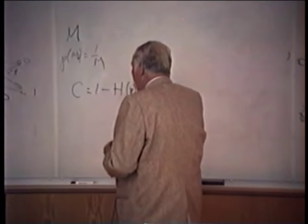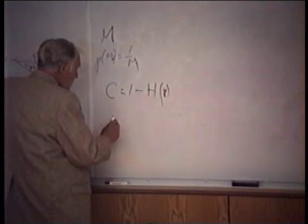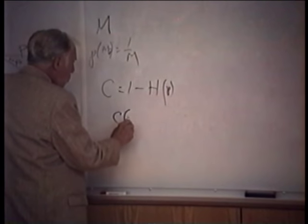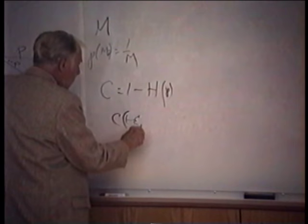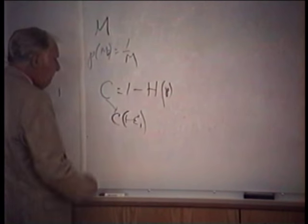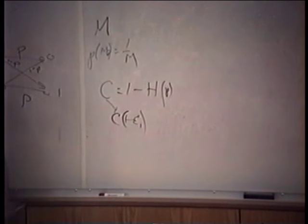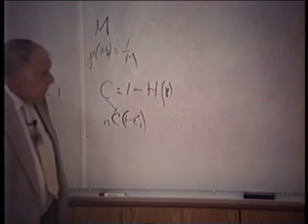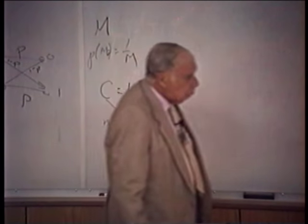I can't quite achieve channel capacity, so I'm going to work at channel capacity minus epsilon, C·(1−ε₁). You pick ε₁ as small as you want — how close do you want to get to channel capacity? You pick it. That's the amount of information I can get through per bit sent.